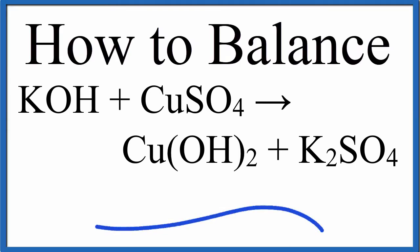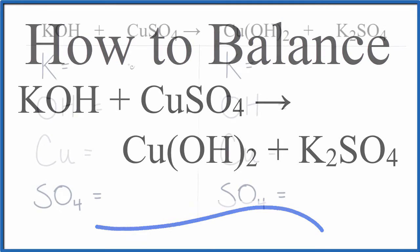To balance this equation, potassium hydroxide plus copper 2 sulfate yields copper 2 hydroxide plus potassium sulfate. Let's count the atoms up on each side of the equation.